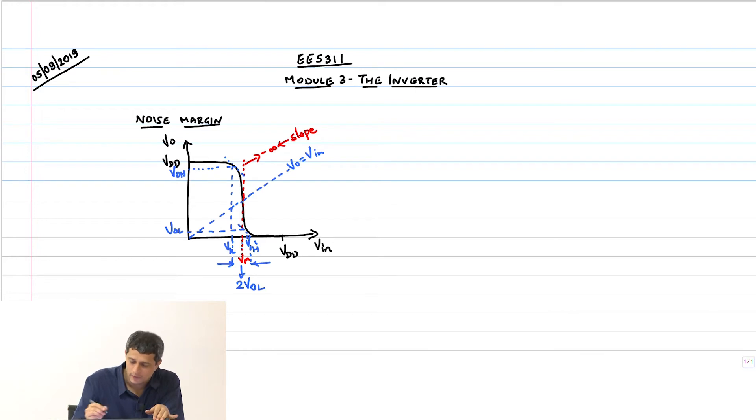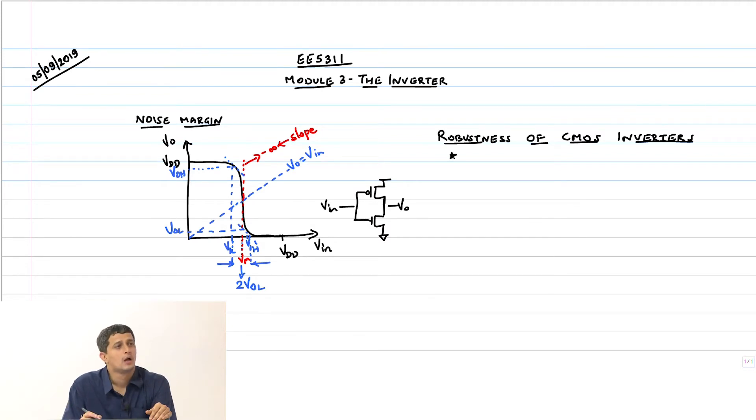Let us just summarize our discussion on robustness of CMOS inverters. First key point: logic voltage levels are rail to rail values.